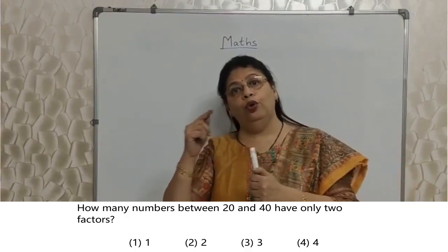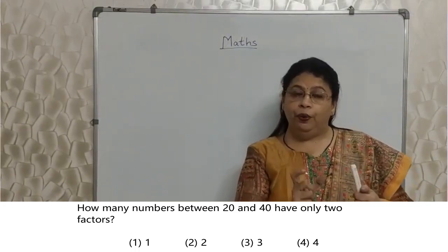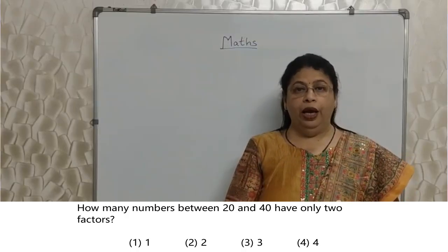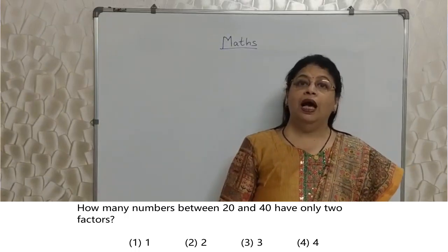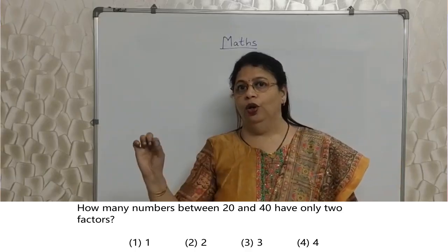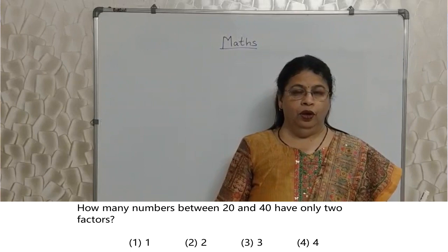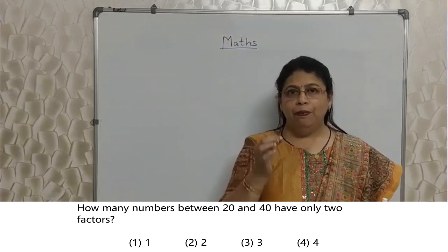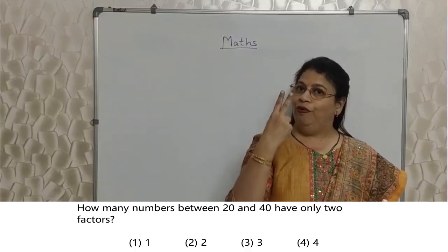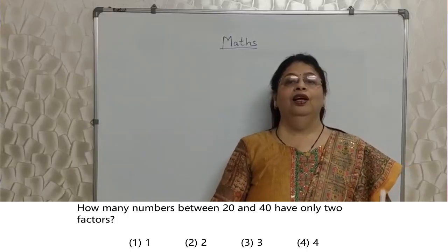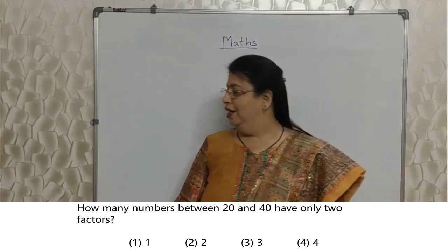Smarter way kabhi bhi time nahi leta hai. Accurate hota hai. We are not compromising on the accuracy, but we are saving time. Here again, from 20 to 40 or between 20 and 40, these words are very very important. If you don't know that which numbers have only two factors, this basic rule, if you don't know, you will spend lot of time and confusion badega. Just simple rule that all the prime numbers have only two factors.